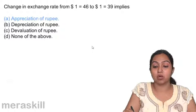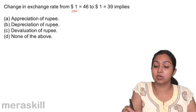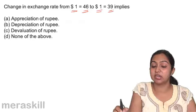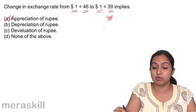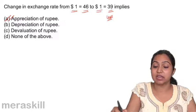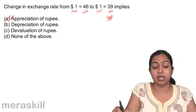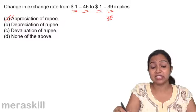Consider a change in exchange rate from one dollar equals 46 rupees to one dollar equals 39 rupees. Earlier, to get goods worth one dollar, we spent 46 rupees. Now we only spend 39 rupees to get the same goods — we are spending less. That means the rupee has been appreciated, implying appreciation of the rupee. Had it been 49 rupees instead of 39, it would have meant we were spending more money to get the same goods, which would indicate that the rupee had depreciated or been devalued.